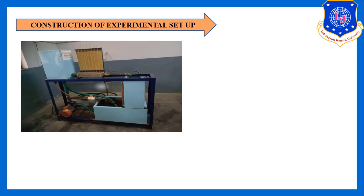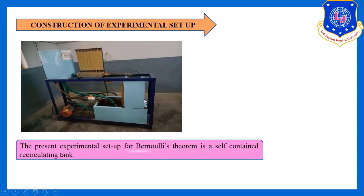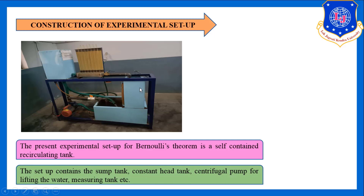Now let's see the construction of the experimental setup. This is a self-contained recirculating tank, meaning water is transferred from the bottom sump tank through a pump to the overhead tank, and from the overhead tank through a flow meter to the measuring tank, and then back again.